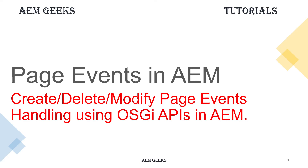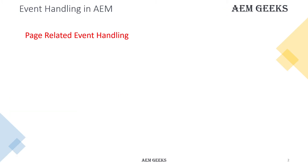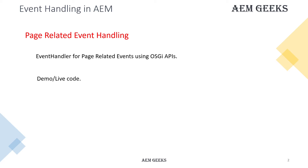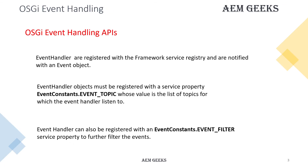In this tutorial, we'll talk about how to write an event handler for page-related events. Suppose you want to perform some tasks on page create, page delete, or page modify — you can write an event handler which will be listening for page-related events and execute your task. As part of this tutorial, I'll explain how to write an event handler for page-related events using the OSGI API, and then show you a demo.